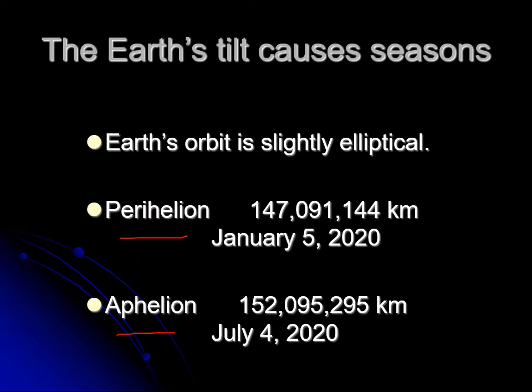So when are we closest to the sun? Students often get this wrong because they think we must be close to the sun in the summer. We're actually closest to the sun in January and farthest from the sun in July. Technically January is summer for the southern hemisphere, and we're furthest from the sun in July — which is winter in the southern hemisphere but not in the northern hemisphere.